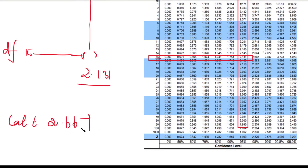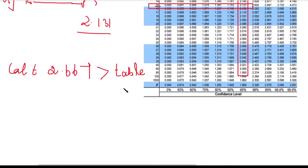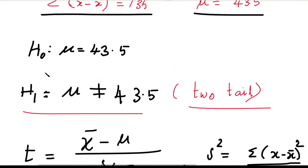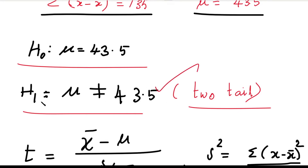In the first case, the calculated value of t (2.667) is greater than the table value of t (2.131). So we reject H₀. H₀ states μ = 43.5. Since we reject H₀, we accept H₁. H₁ is the answer.